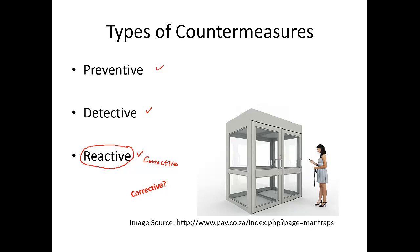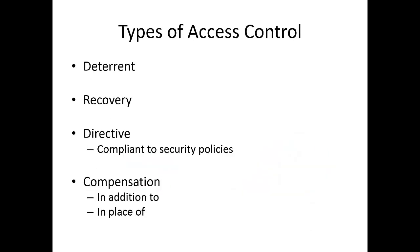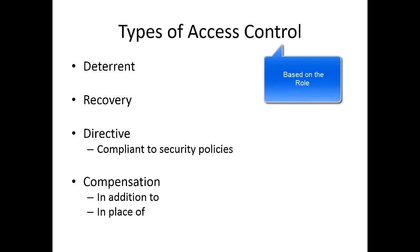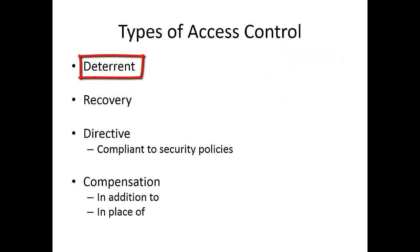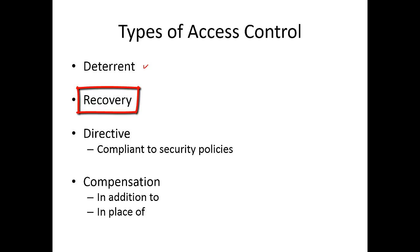We can also categorize access control based on the role it plays. For example, it could play the role of a deterrent — by employing access control, you could keep an incident from happening, which is similar to preventative. The next role is recovery, where access control focuses on getting back to normal, similar to corrective.